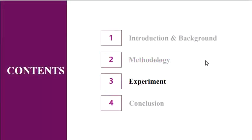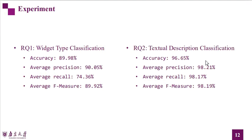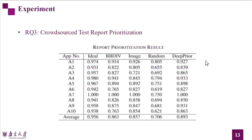We propose three research questions to evaluate DeepPrior's ability to prioritize crowdsourced test reports. First, UI widget classification effectiveness. Second, textual description classification effectiveness. Such results show that it provides excellent capability to classify widgets and analyze textual descriptions, which also lays a solid foundation for crowdsourced test report prioritization. Third, crowdsourced test report prioritization effectiveness.